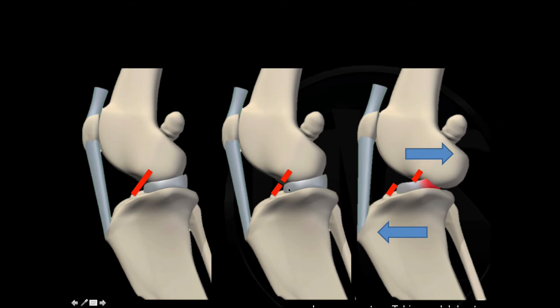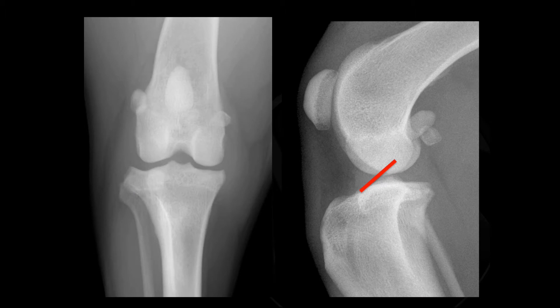The structure in the center of the joint is the meniscus. The meniscus is being injured by the instability of the knee — the femur is contacting the meniscus in a way that causes a meniscal injury. This becomes an important part of your dog's knee injury and can also affect the way your dog's knee is treated.